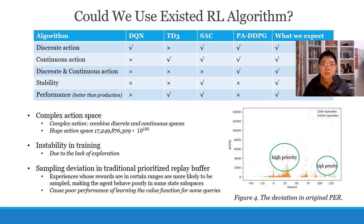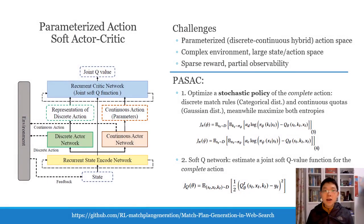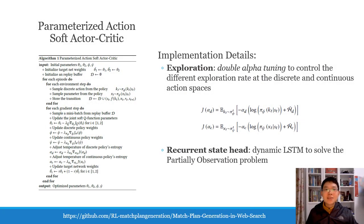We also noticed a sample deviation issue in traditional prioritized replay buffers, causing poor performance of learning the value function for some queries. To address these issues, we propose PASAC, which introduces the state-of-the-art reinforcement learning algorithm SAC to our parameterized action settings. In PASAC, the actor-critic framework is adopted. For the actor, we optimize a stochastic policy over the complete action, composed of discrete match rules and continuous quotas, while aiming to maximize both entropies. For the critic, the soft-Q network estimates a joint soft Q-value function for the complete action.